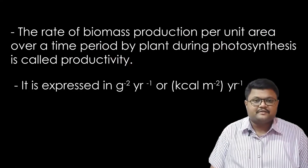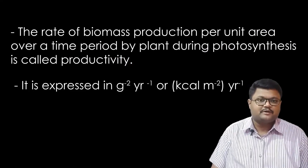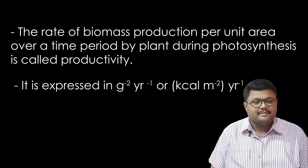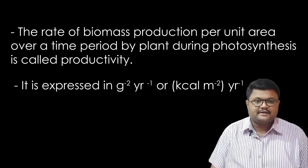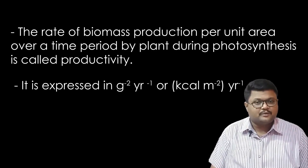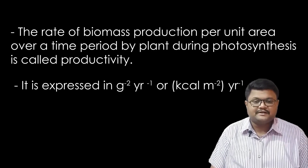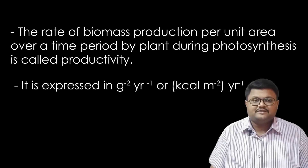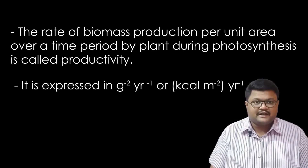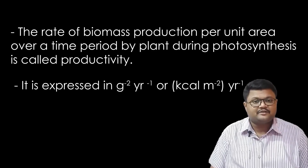Productivity can be expressed with the equation g m⁻² yr⁻¹, which can also be written as kilocalorie per square meter per year. From the equation you can understand that it is per area and per time. They mention per area and per time because all places do not have equal photosynthetic activity, since they do not have the same quantity of air, temperature, soil, or water.